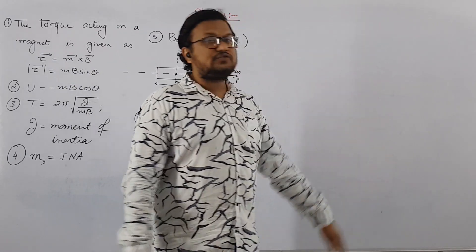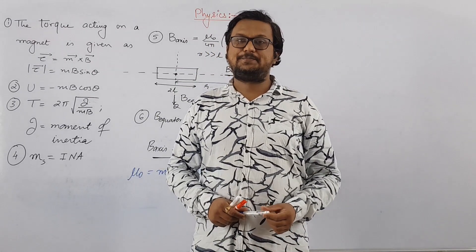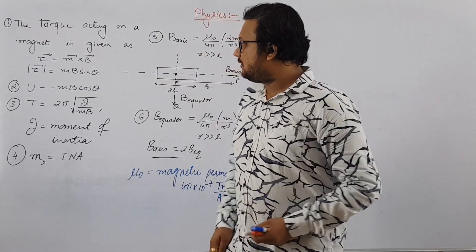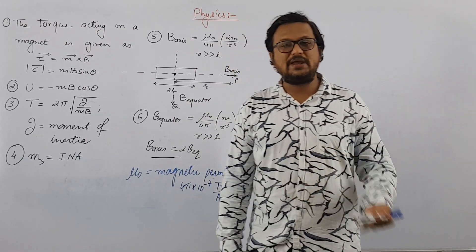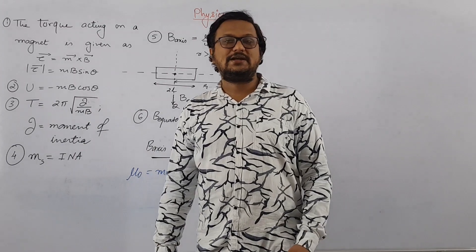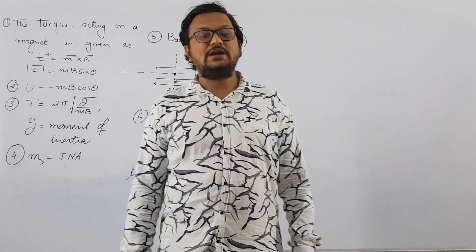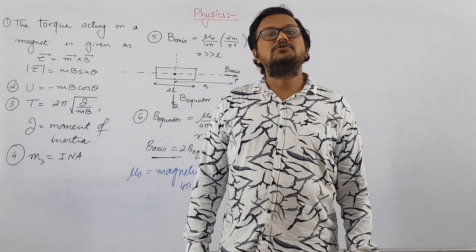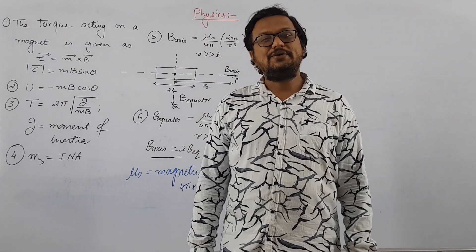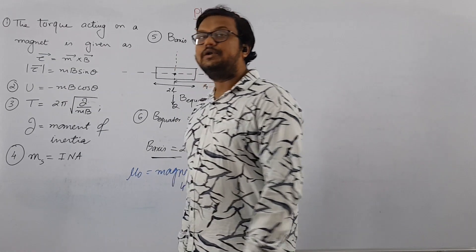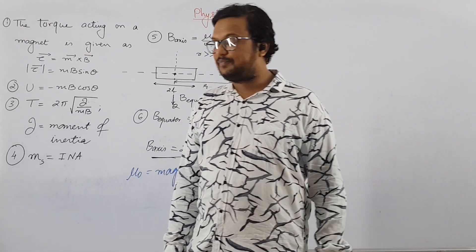These are the formulas we are going to use in this video lecture to solve a few examples. You can write down these formulas on a page. In this lecture we are going to solve unsolved examples 5.8, 5.9, and 5.12. In the last lecture we solved up to 5.7, from unsolved example 5.3 to 5.7. So we will continue from exercise 5.8 onwards.